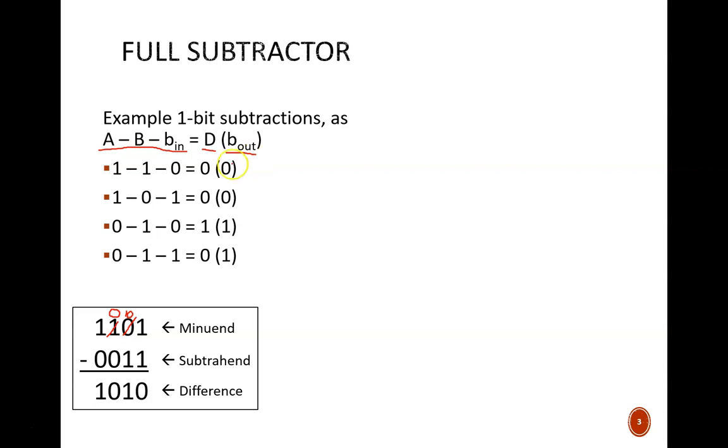The first two examples show there is no difference between the subtrahend and the borrow. Both feature 1-1, resulting in a difference of 0, with no need for a borrow. The next example shows 0-1. To accomplish this, a borrow is needed, which gives us 1-1 in binary, or 2-1 in decimal. Therefore, the difference is 1.